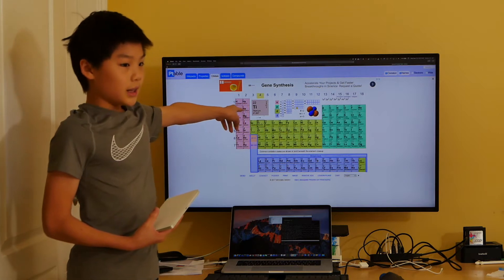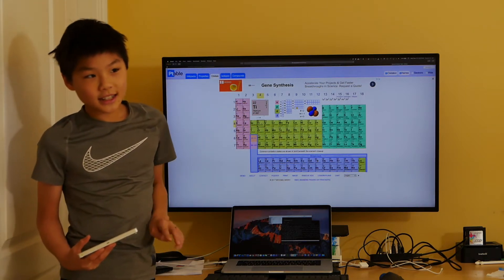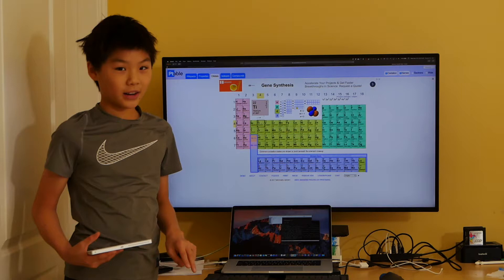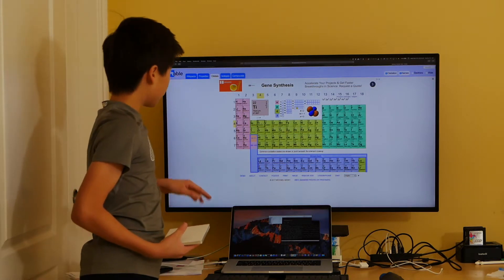The 22 electrons are distributed into 4 shells containing 2, 8, 10, and 2 electrons, respectively.